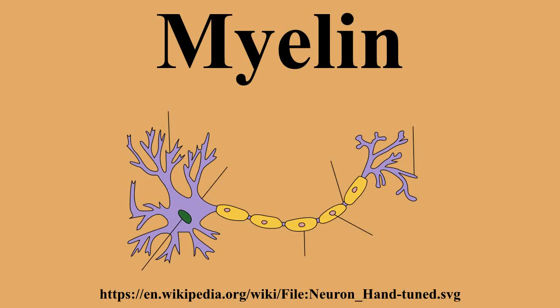Dysmyelination is characterized by a defective structure and function of myelin sheaths. Unlike demyelination, it does not produce lesions. Such defective sheaths often arise from genetic mutations affecting the biosynthesis and formation of myelin. The shiverer mouse represents one animal model of dysmyelination. Human diseases where dysmyelination has been implicated include leukodystrophies and schizophrenia.